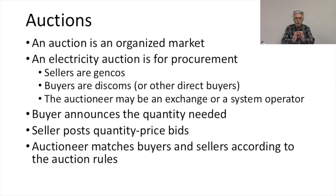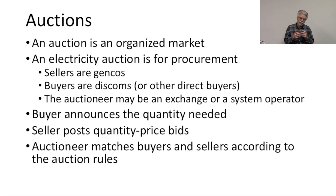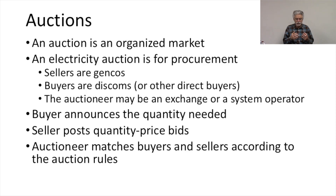This brings us to another form of exchange for electricity, and that is auctions. Auctions are used for allocating electricity in many countries. Certainly in my own region in the US, auctions are used for determining which generators are going to be used for supply of electricity on a given day. An electricity auction is a procurement auction. The sellers are Gencos, the buyers are DISCOMs or other direct buyers of electricity, and the auctioneer might be an exchange or a system operator.